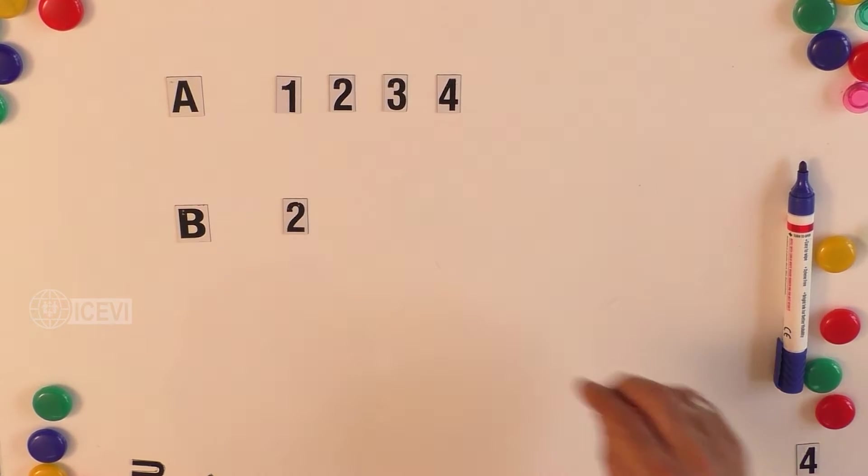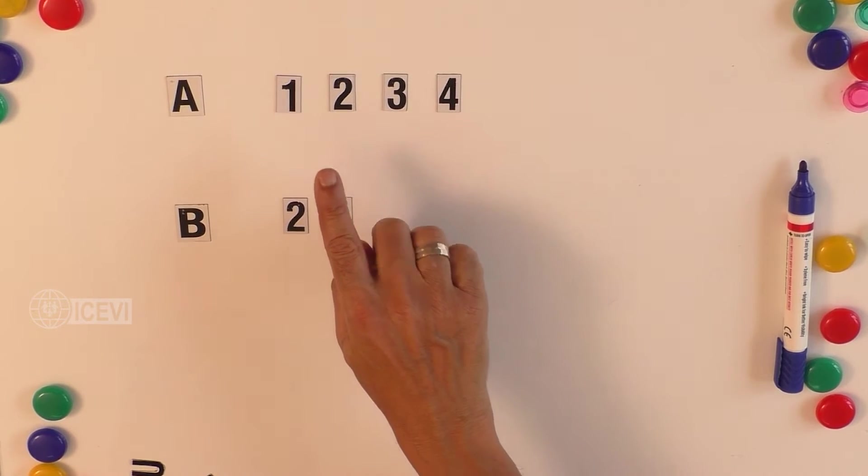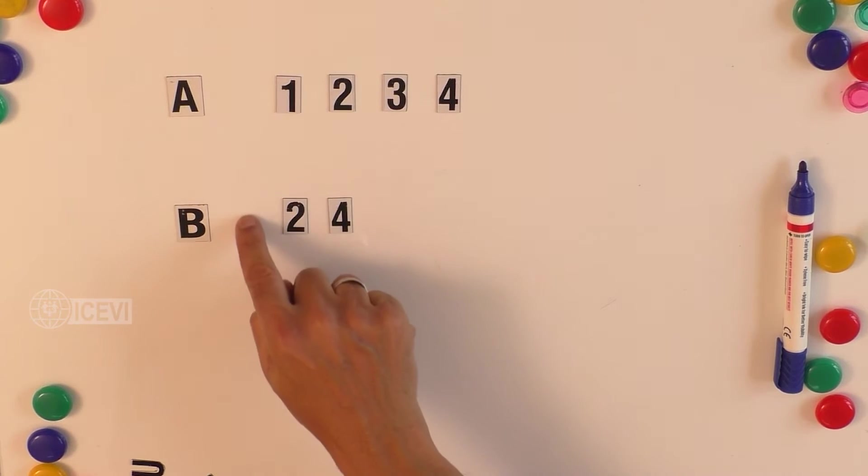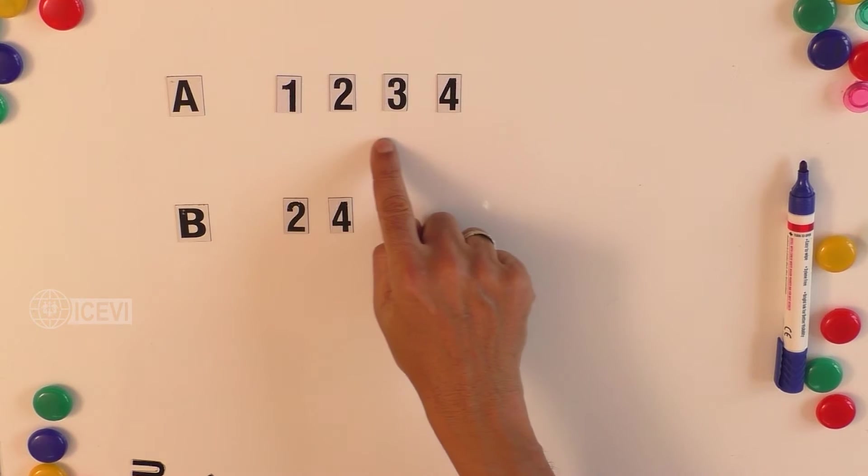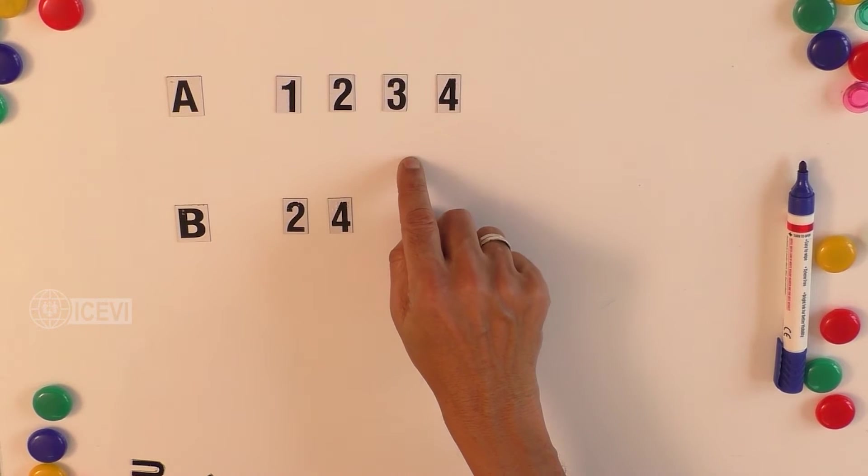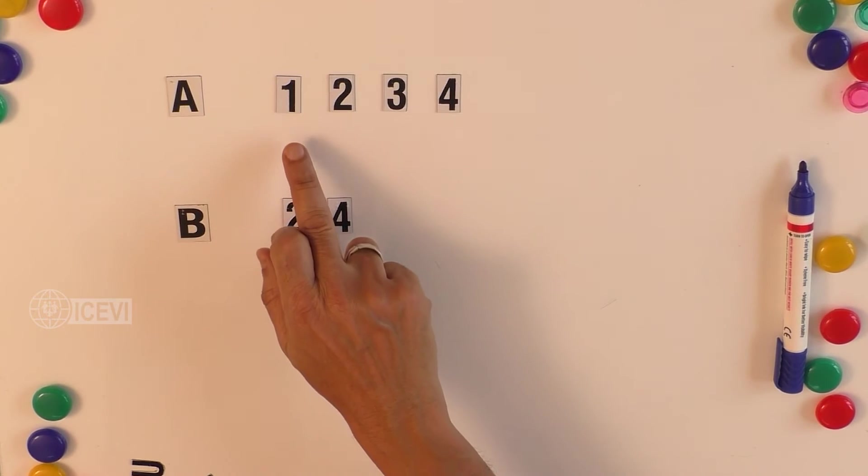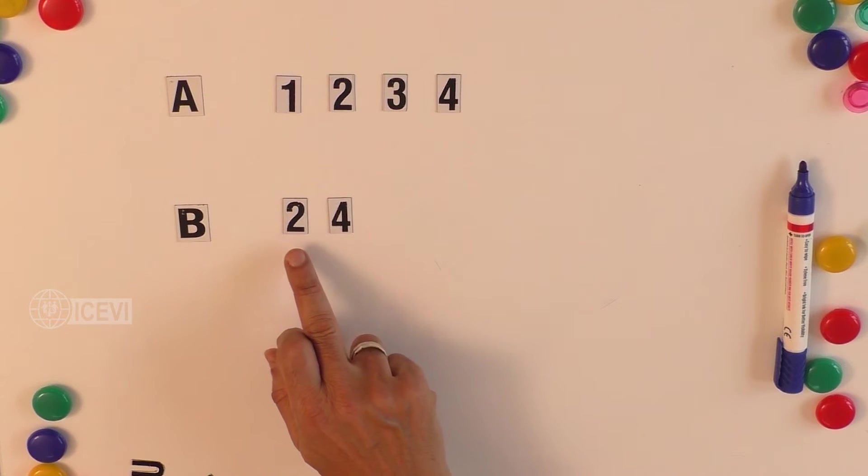Now what do we note here? Set A has four elements and set B has two elements. We can notice that set A contains all elements of set B, because set A has 1, 2, 3, 4 and set B has 2, 4. So the 2 and 4 of set B are already included in set A.